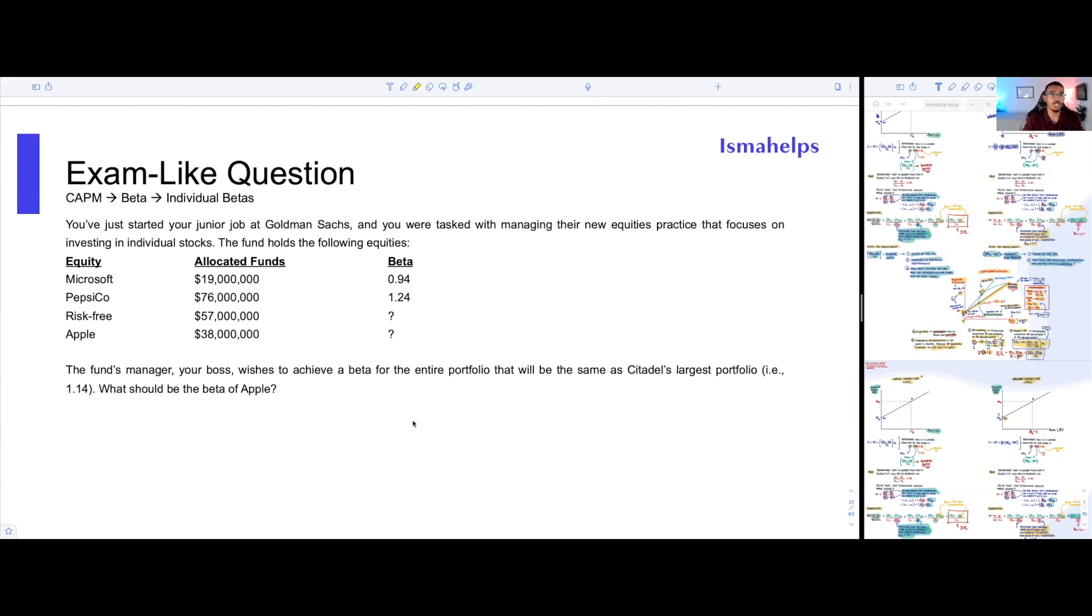So you just started your job as a junior at Goldman Sachs. And you were tasked with managing your new equities practice that focuses on investing in individual stocks. The fund has four different equities: PepsiCo, the risk-free rate, Microsoft, and Apple. They all have different dollar values: $19 million, $76 million, $57 million, and $38 million. The question gave you betas for two of these different stocks, but two of them we don't know yet.